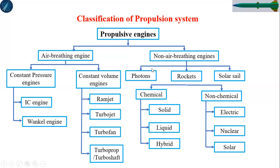These are the chemical propulsion systems. The others are non-chemical propulsion systems, such as electric propulsion, ion propulsion systems, nuclear propulsion systems — which include fusion and radioactive decay — and solar propulsion systems. This is generally how we classify propulsion systems.